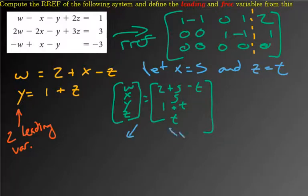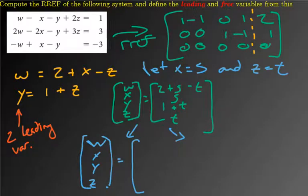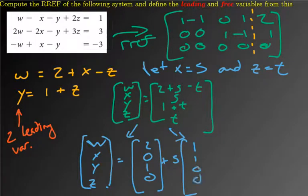so if we kind of separate this out, W, X, Y, Z, we have, there's like a point that's on the solution space that is 2, 0, 1, 0, right? And then if you pull out the stuff with just with S, you would get 1, 1, 0, 0. And then you would get, for T, you get negative 1, 0, 1, 1.